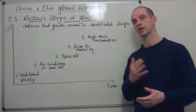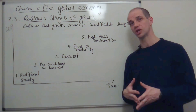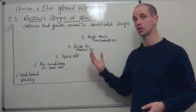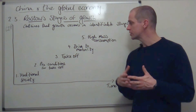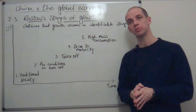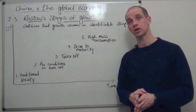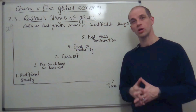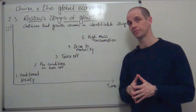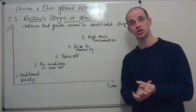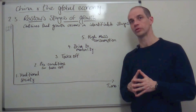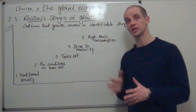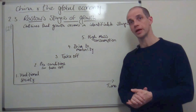Moving into the fifth stage — high mass consumption — consumption dominates the economy and tertiary services and retail are very important. Consumers buy those high value-added goods, and a very small proportion of people remain employed in agriculture. Moreover, the manufacturing sector has likely declined, potentially significantly. That doesn't always happen — Germany, for instance, is renowned for the quality of its manufacturing and employment there remains robust — but in other economies a process of de-industrialization has begun.